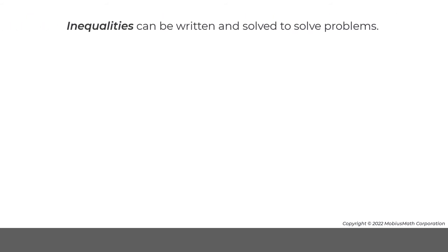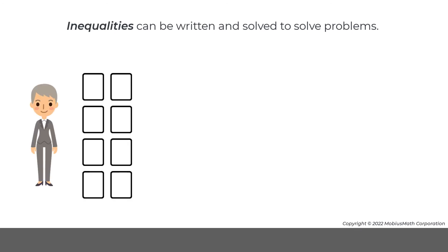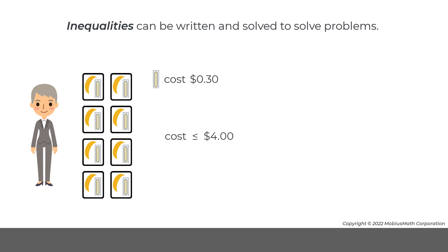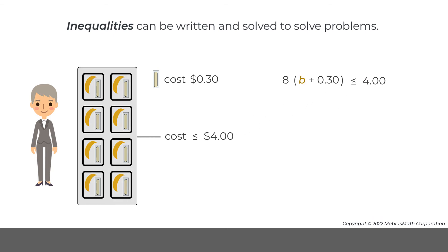Inequalities can be written and solved to solve problems. For example, a teacher is making 8 snack packs with 1 banana and 1 cheese stick in each pack. Cheese sticks cost 30 cents, and the teacher plans to spend $4 or less on the snack packs. The following inequality can be written to represent this situation, where b is the cost of 1 banana.